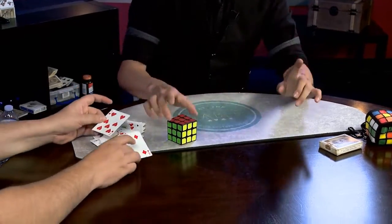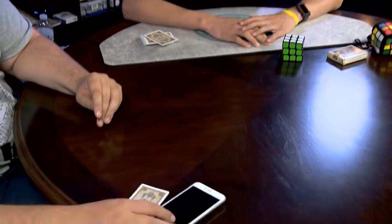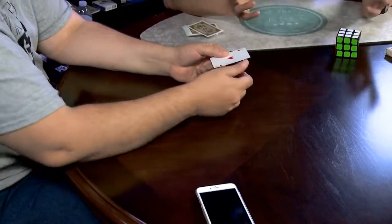And there's a Rubik's Cube solved. So, you have the Ace of Hearts underneath your phone. Boom. Boom. There we go. Boom.